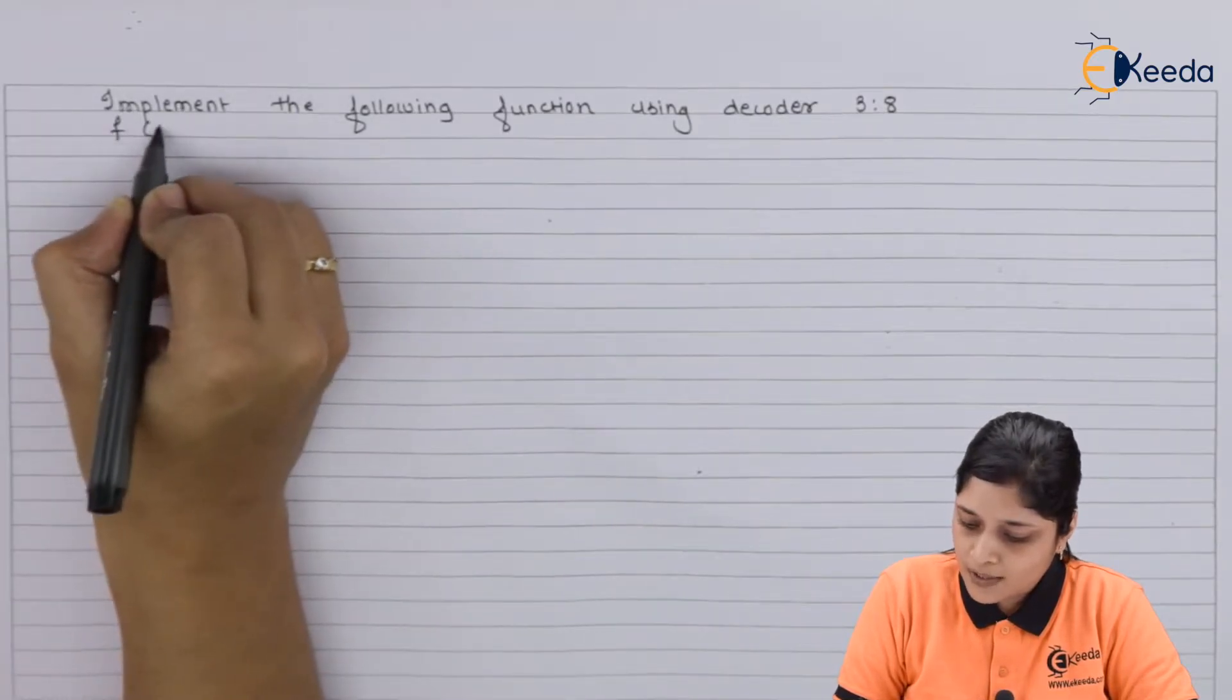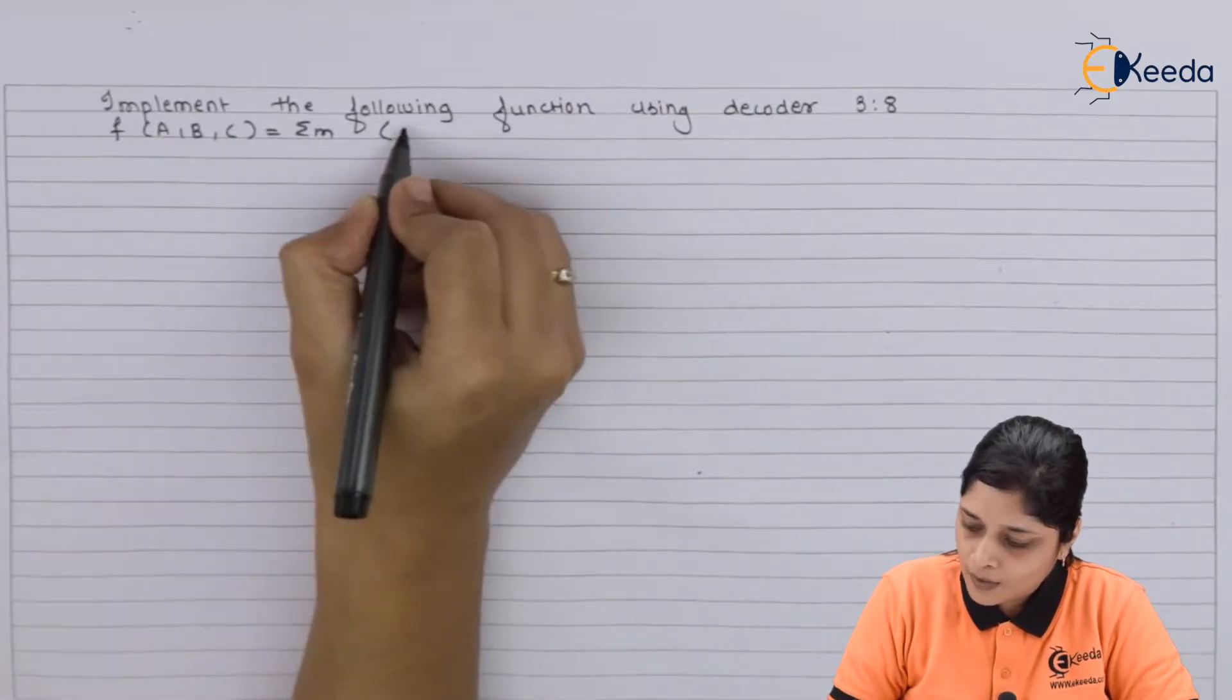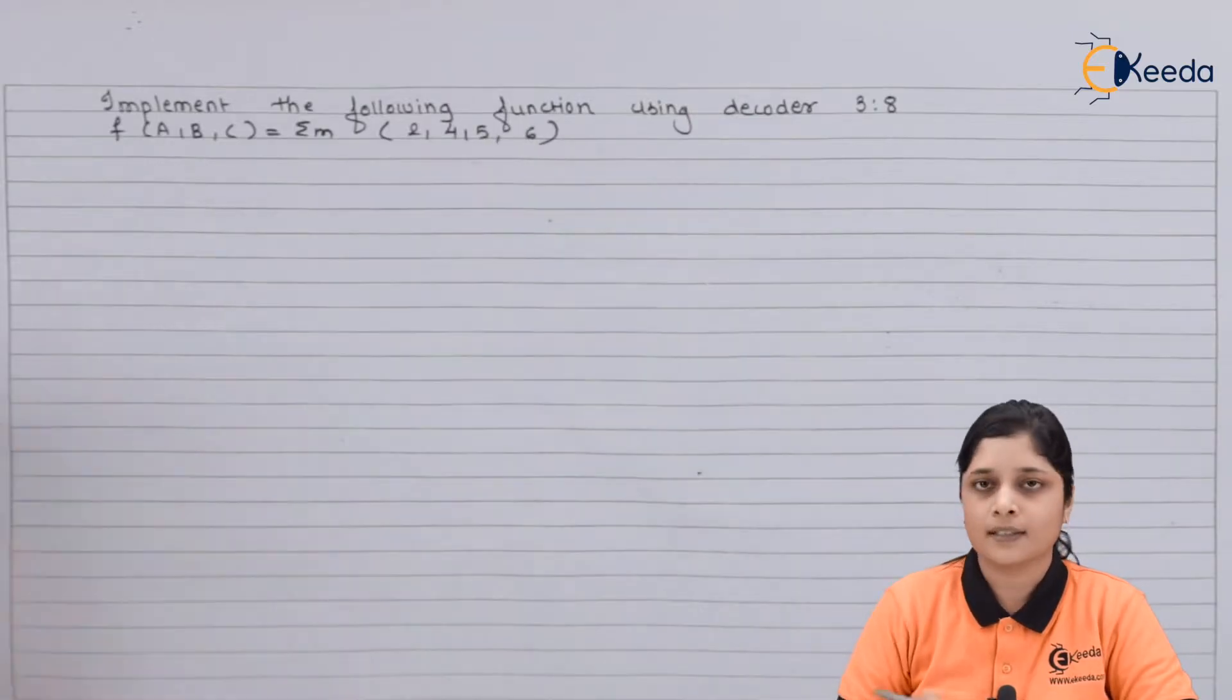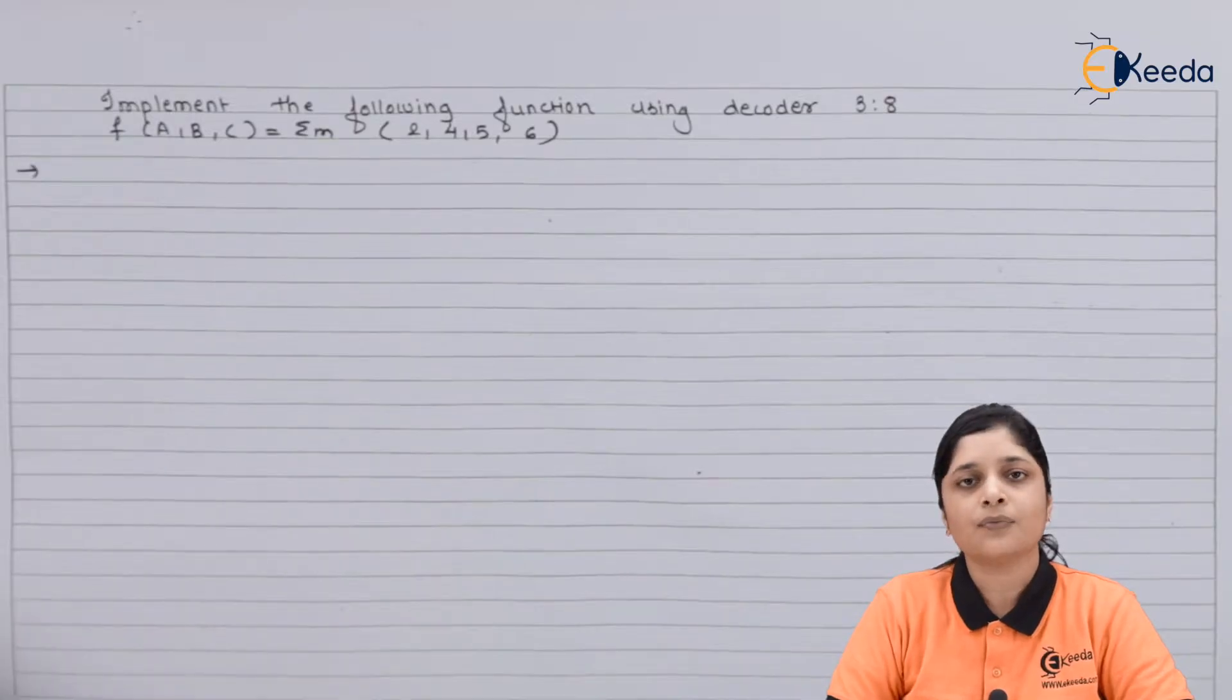The expression is f(a,b,c) equals to summation m(2,4,5,6). So this expression you have to realize using 3-to-8 decoder.